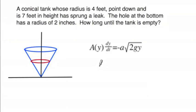A little example about Torricelli's law. We're going to fill this conical tank and let it drain. The tank has a radius of 4 feet at the top, it's 7 feet in depth going up and down the y-axis, and it's point down. Now this thing is going to spring a leak, has a hole at the bottom which has a radius of 2 inches, and we want to know how long is it going to take until this tank is completely empty.